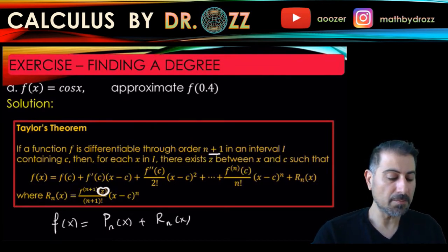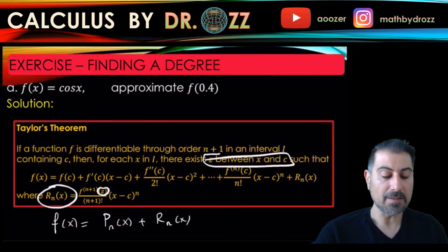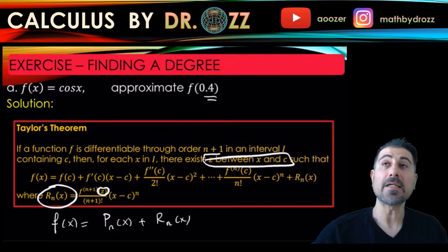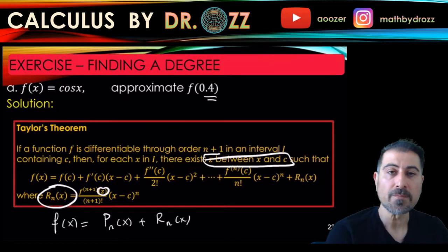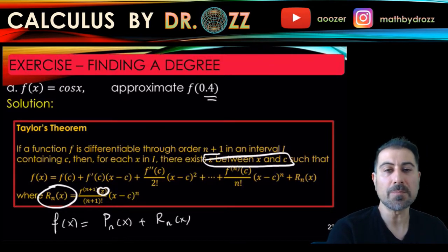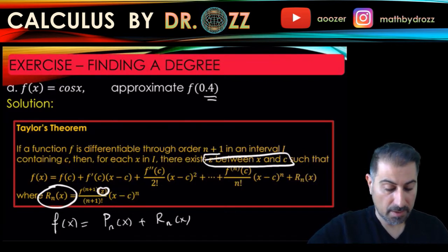So here z is very important, that's what our analysis is going to be revolving around in the next slide. And z is a guy in between x and c, so if you want to evaluate this for 0.4, and if you expand cosine x into its Taylor series at c equals 0, so that means z is going to be a number in between 0 and 0.4. Let's do the analysis.